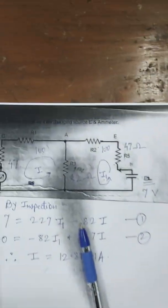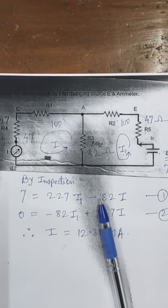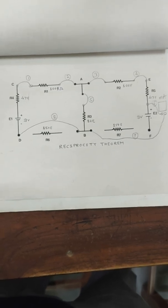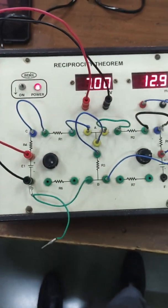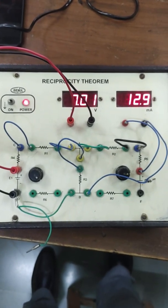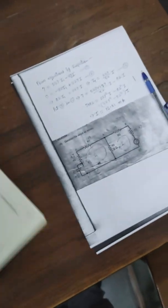Similarly, make figure B connections by changing the positions of the supply source and ammeter. You will need the same number of chords — a total of 8. The connections are already made; just keep the voltage source connected with the voltmeter. Applying 7 volts, you can see the ammeter reads 12.9 milliamperes.